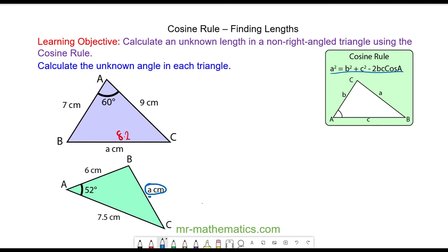Okay, to work out the length of a we're going to use the formula a squared is equal to b squared plus c squared minus 2bc cos A. We know that 7.5 is the lowercase b because it is opposite the angle B and opposite the angle C is 6 and this will be the lowercase c.